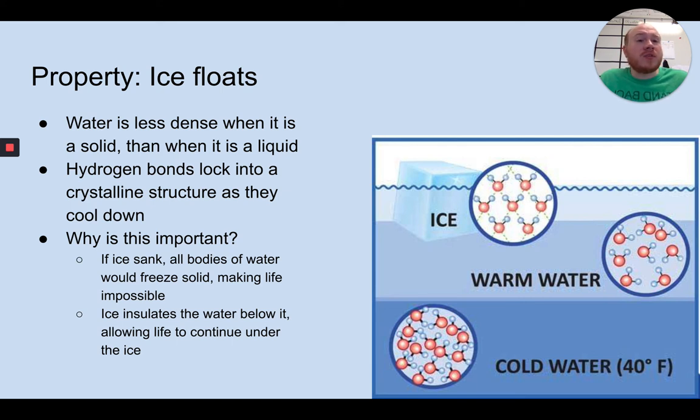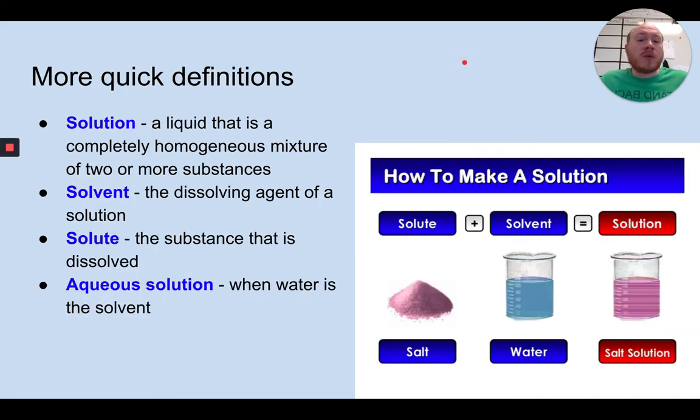This is really important for life. At one point, we believe the earth was completely covered in ice, but because ice floated, the organisms that were alive underneath were probably able to still survive near volcanic vents in other areas because the insulation prevented the full ice to freeze over and completely freeze solid. So that's really important. Ice floating is an important property of life and water in general.